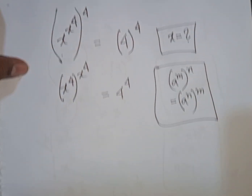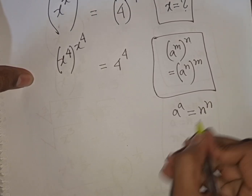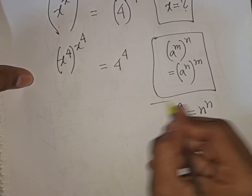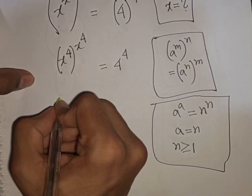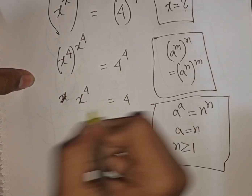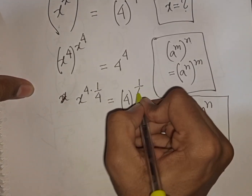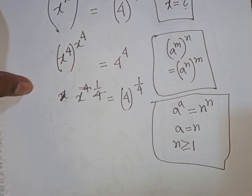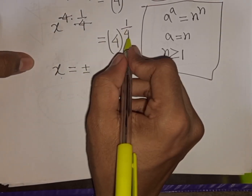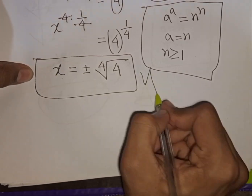Now we apply the rule that a power a equals n power n implies a equals n, where n is greater than or equal to 1. Comparing, x power 4 equals 4. To find x, we raise both sides to the power 1/4: x equals plus or minus 4 power (1/4), which can be written as plus or minus the 4th root of 4. This is our final answer.